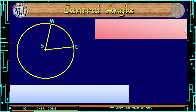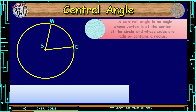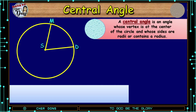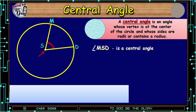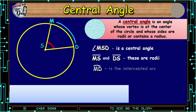Let us first define Central Angle. A Central Angle is an angle whose vertex is at the center of the circle and whose sides are radii or contain radii. Let us look at Circle S. Angle MSD is a central angle because its vertex lies on the center of the circle, and its sides — line segment MS and line segment DS — are radii, while arc MD is the intercepted arc.